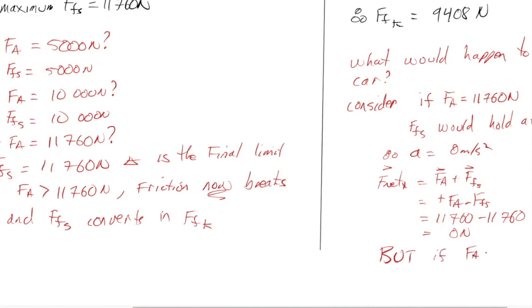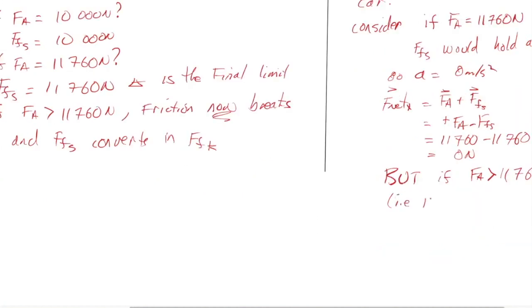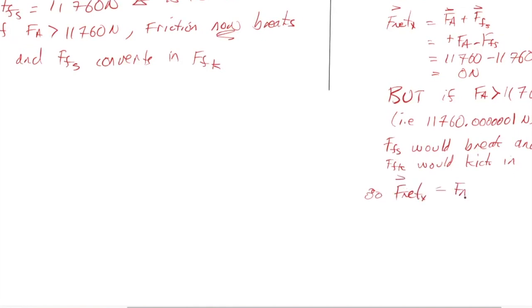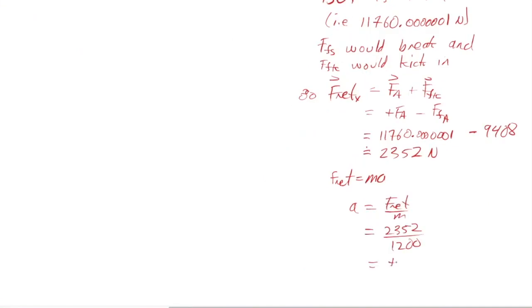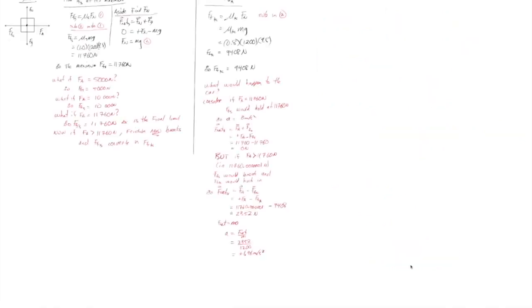But if the force applied just ever so slightly was greater than 11,760 newtons, i.e., 11,760.0000001 newtons. Force of friction static would break and force of friction kinetic would kick in. Therefore, Fnet in the X component would equal to the applied force plus the force of friction kinetic, which would be positive Fa minus force of friction kinetic, which would be our 11,760.0000001 newtons minus, now this is the important part, 9,408, which is roughly equal to, so Fnet equals Ma, A is equal to Fnet over M, the car would accelerate at 1.96 meters per second squared. And that's basically how that works.